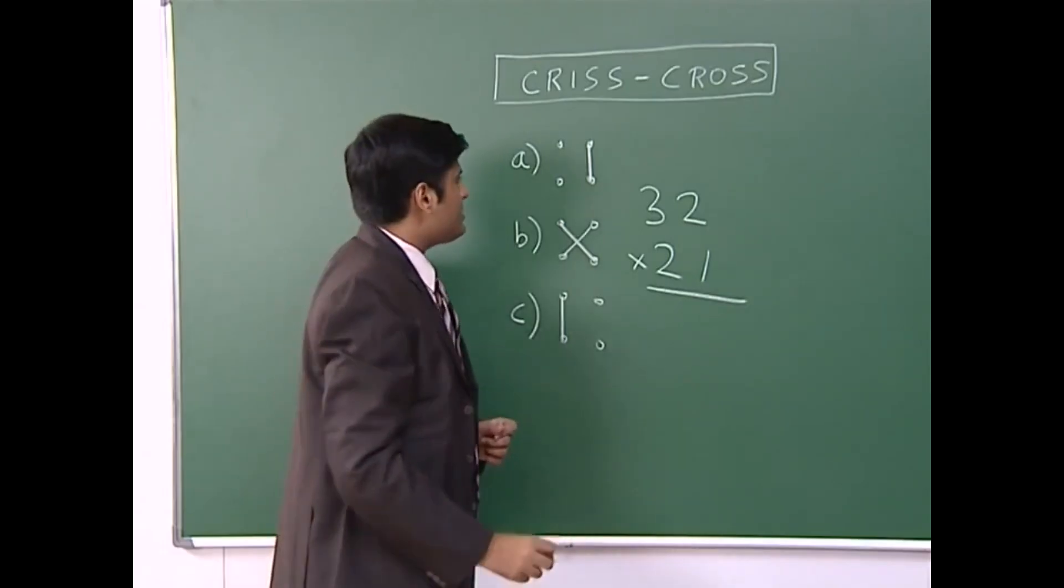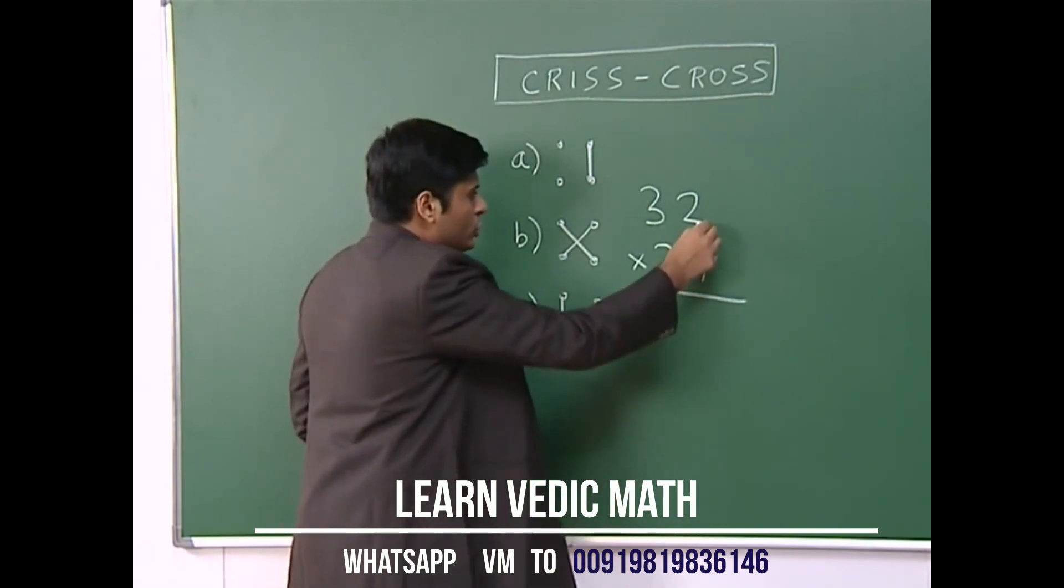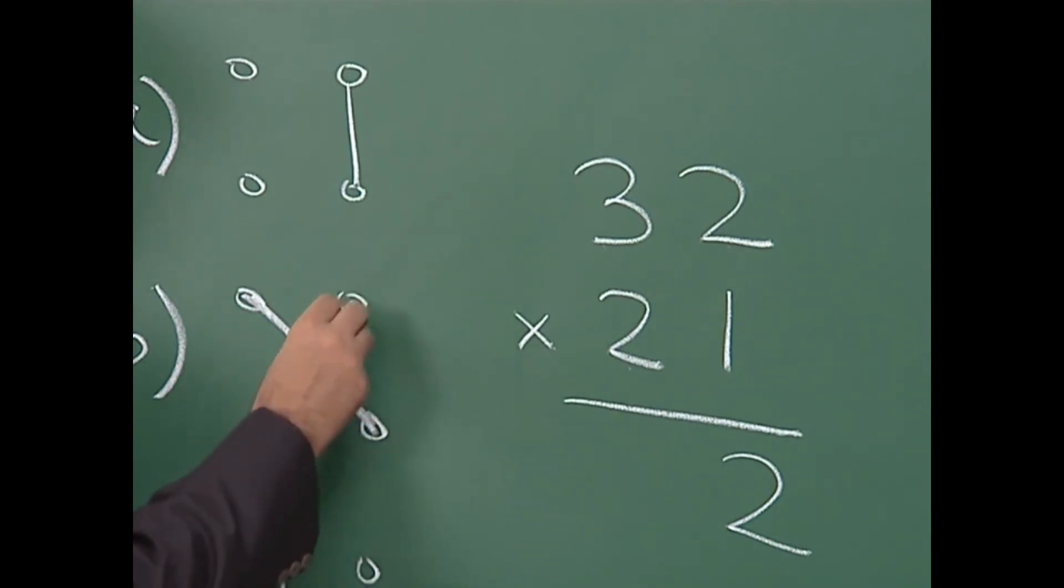First step says you multiply these two numbers right and right. We know 2 times 1 is 2. Then we go like this and like this. We will add both the answers.